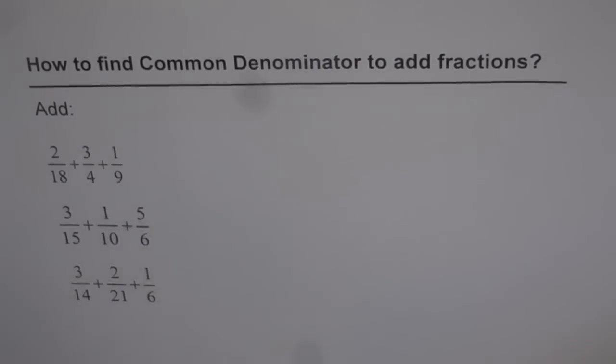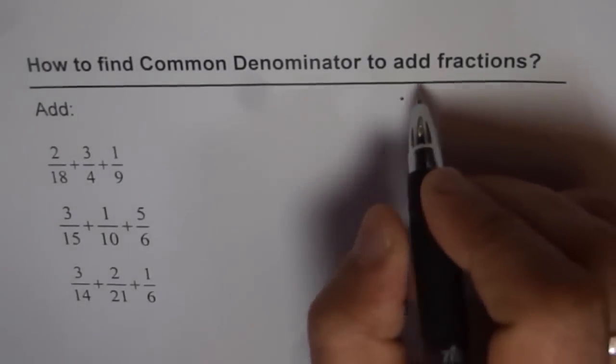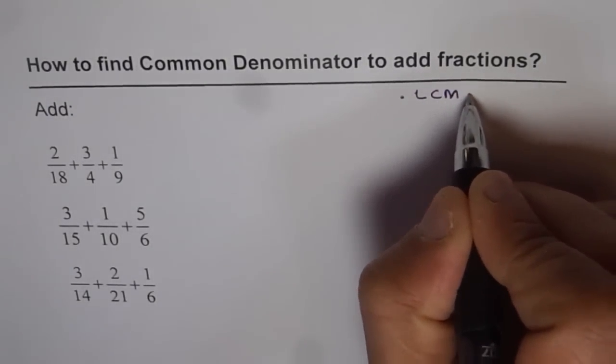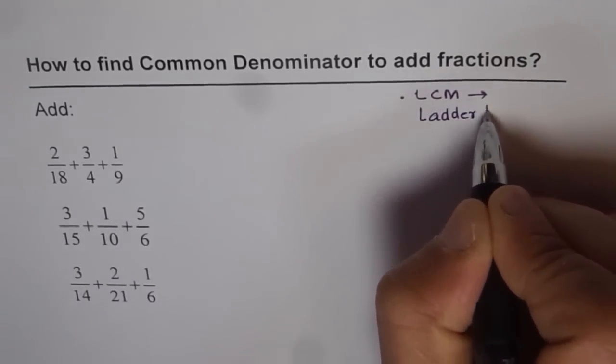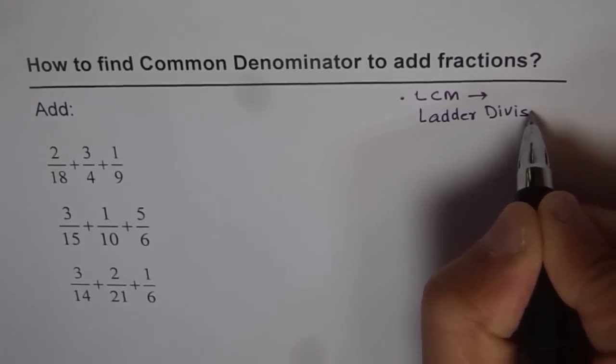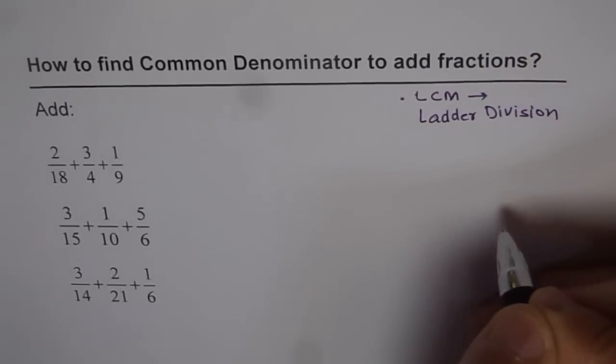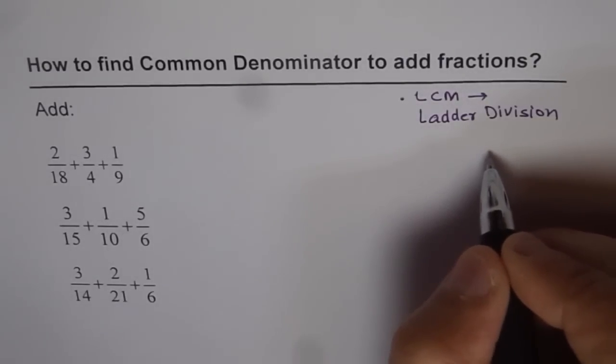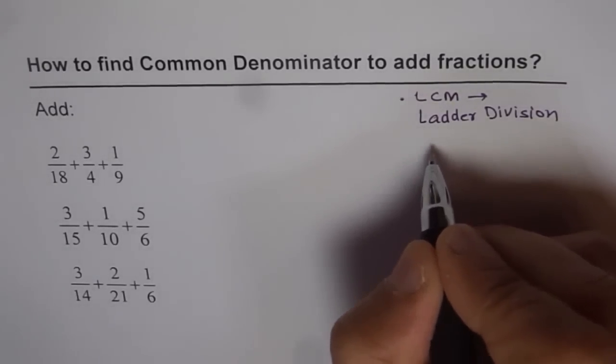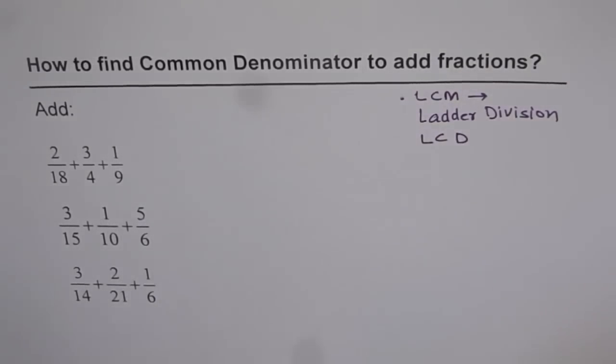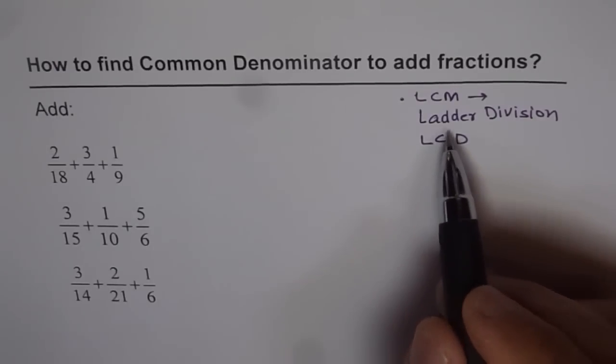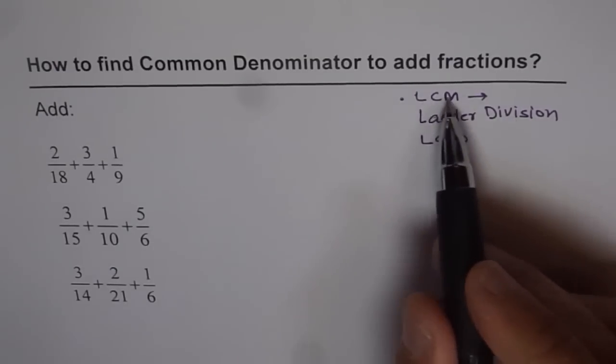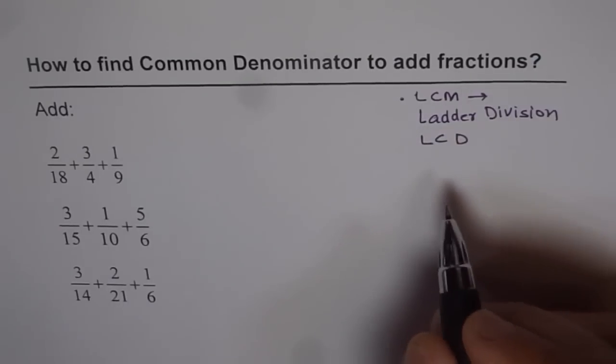Finding common denominator is by the process of least common multiple. We had used a method which is ladder division. So we'll do ladder division to find common denominator. So we'll get a common denominator, and that denominator will be least. So we call that as least common denominator. Step number one for us is to find least common denominator. Method used will be ladder division, which we learned in finding LCM. So that is the first step.